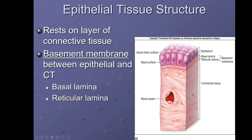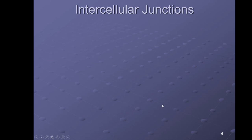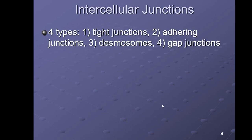Epithelial tissues are attached to something called the basement membrane, which has two layers: the basal lamina, which is more superficial, and the reticular lamina, which is a little bit deeper. Everything below that is connective tissue. Remember, epithelial tissue does not have blood vessels — that's why you see a blood vessel in the connective tissue region below.